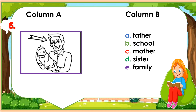Number 6: Look at this picture. Match this picture with a correct word in column B. A. Father. B. School. C. Mother. D. Sister. E. Family. Write the letter only.